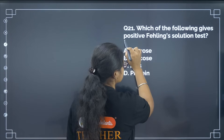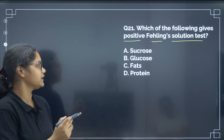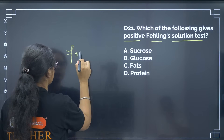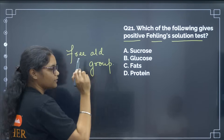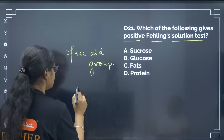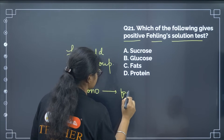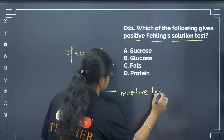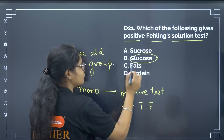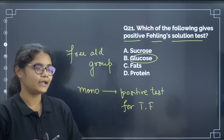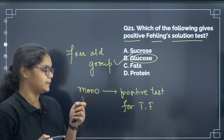Which of the following will show a positive Fehling's solution test? The condition for a positive Fehling's test is a free aldehyde group. Compounds with a free aldehyde group show positive tests for Tollens' reagent and Fehling's reagent. All monosaccharides show positive tests. Glucose is a monosaccharide with a free aldehyde group. The correct answer is option number B.